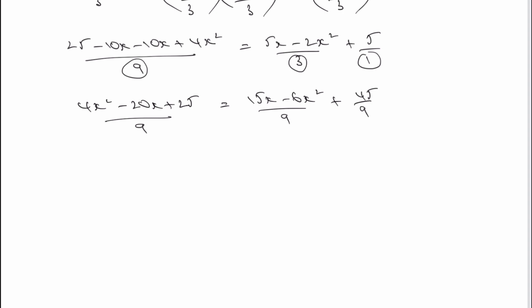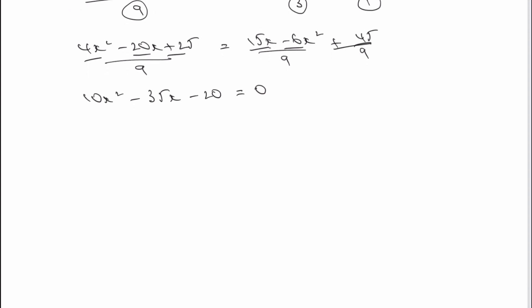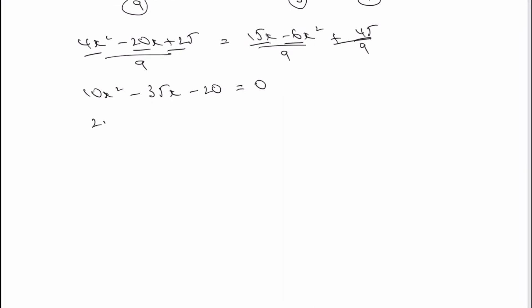Now I've got the same denominator for all terms, I can ignore it — I've levelled the playing field. I need to make everything equal to zero on the left-hand side. So I've got four x squared minus six x squared, which gives me 10x squared. Then minus 20x minus 15x brought over gives minus 35x. And plus 25 minus 45 gives minus 20. So 10x squared minus 35x minus 20 equals zero.